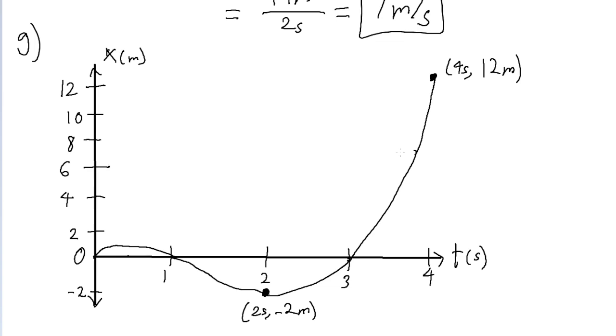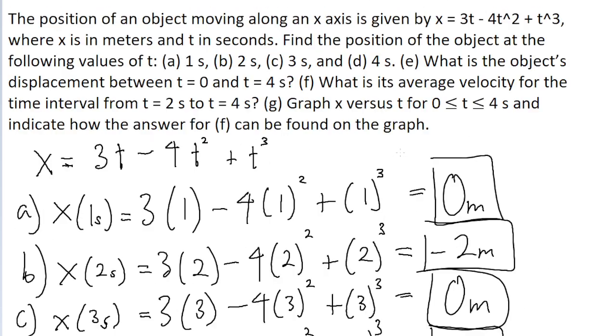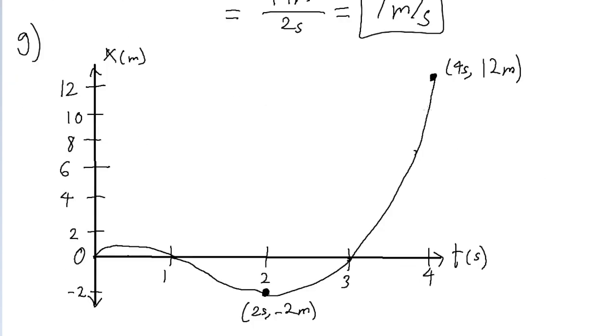But the problem also asks us to give some kind of visual indication of the answer to part F, which asked about the average velocity from 2 seconds to 4 seconds. Recall that average velocity refers to a total displacement between two points divided by the time difference between those two points. So a graphical representation of an average velocity is just going to be a straight line between those two points.